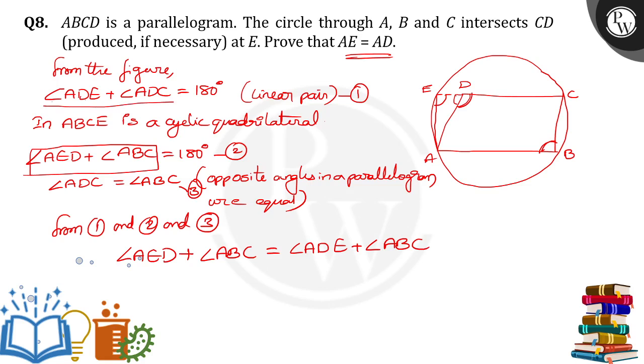Angle ADC is replaced with angle ABC from equation 3. Both ABC angles will get cancelled.